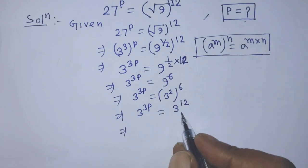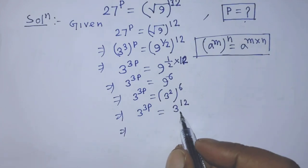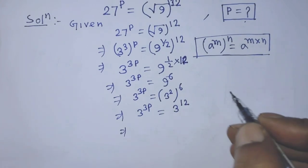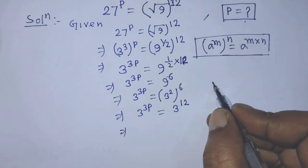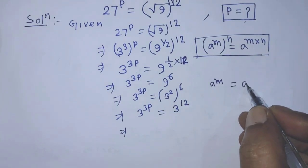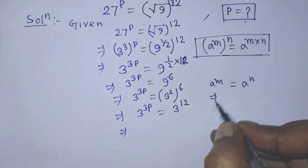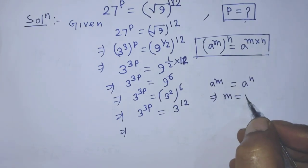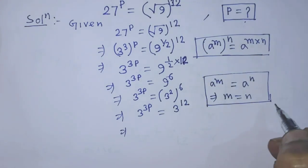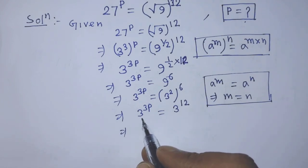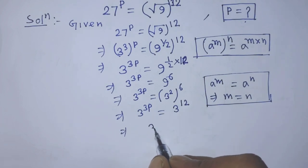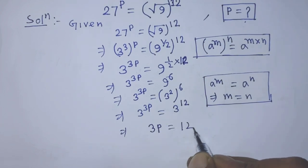In this equation, the base on both sides is the same. So we apply the formula: if a to the power m is equal to a to the power n, then m is equal to n. We cancel the base 3 from both sides, and it gives us 3p is equal to 12.